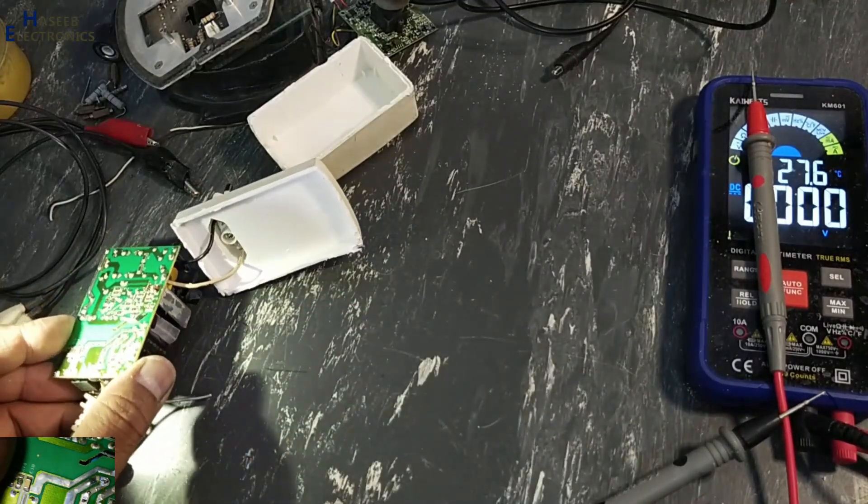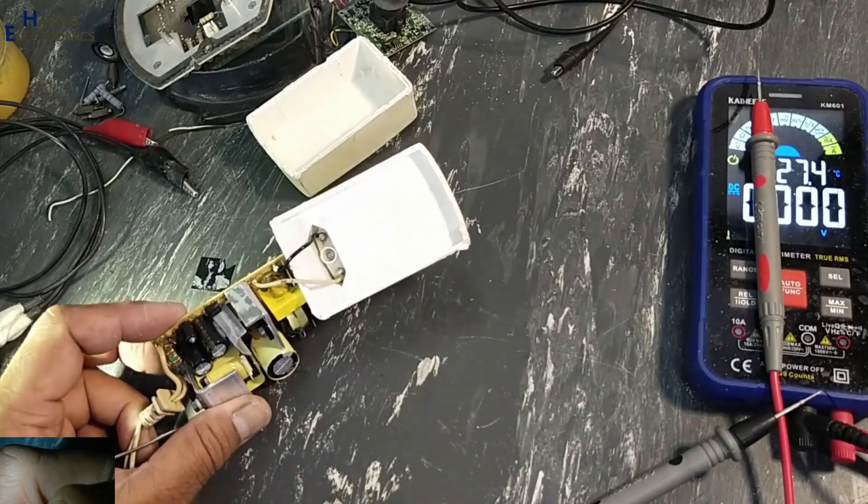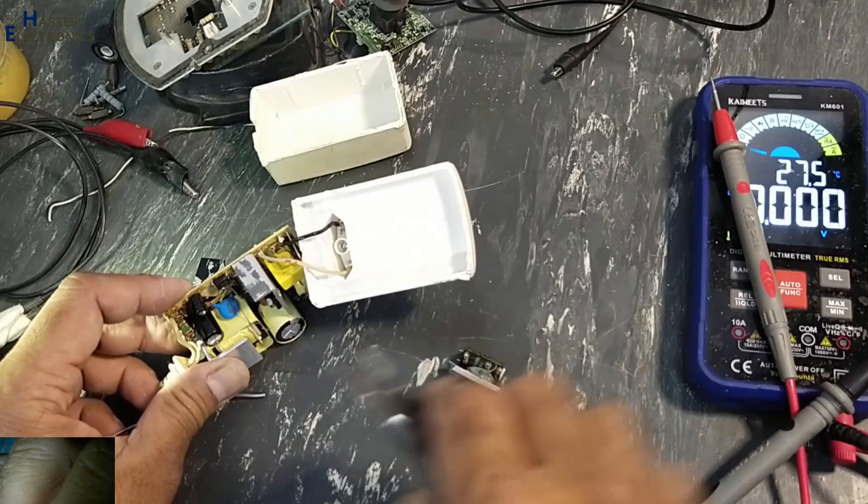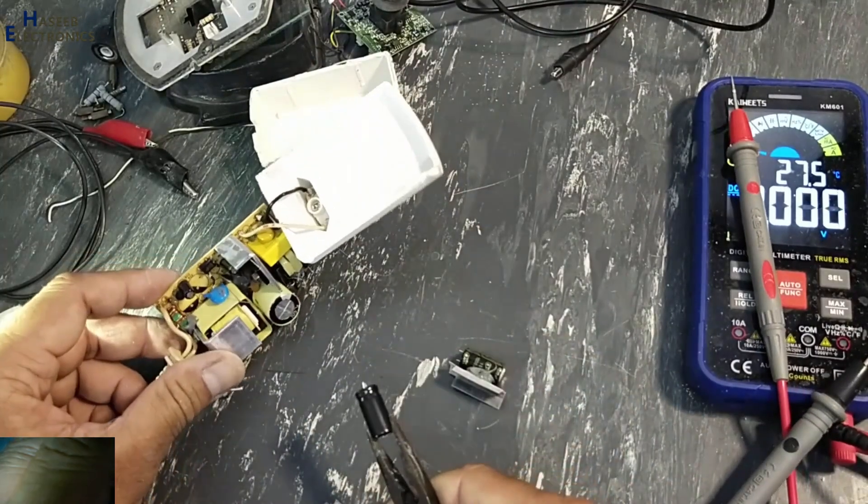When any power supply has low output with poor regulation, most of the time the voltage are dropping. That time these output capacitors are not storing the charge.